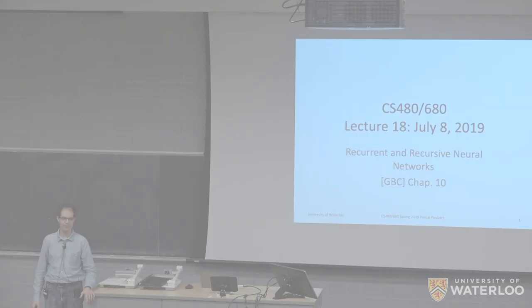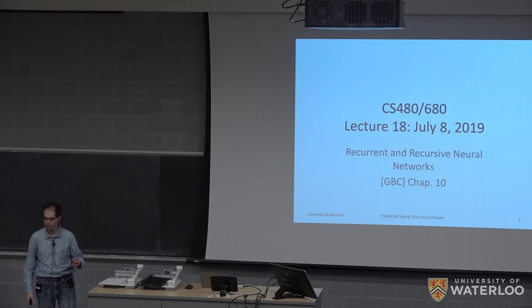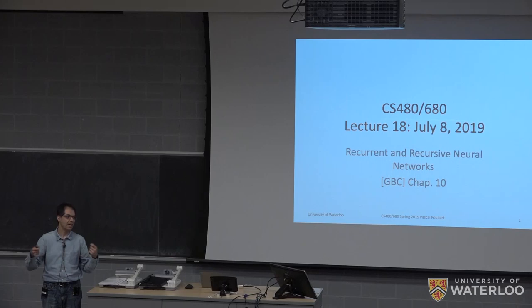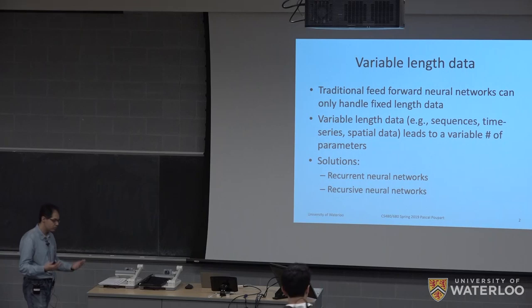Good morning everyone, let's get started. Today we're going to talk about two new models: recurrent and recursive neural networks, in continuation with the previous lecture. These are models suitable for sequential data that does not necessarily have a fixed length. We've already seen hidden Markov models, and now we're going to see how recurrent neural networks generalize those, and then recursive neural networks generalize even further.